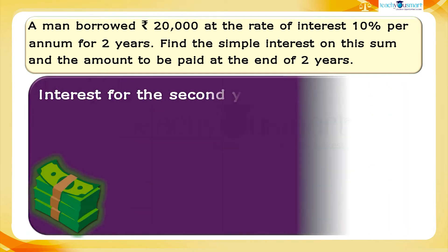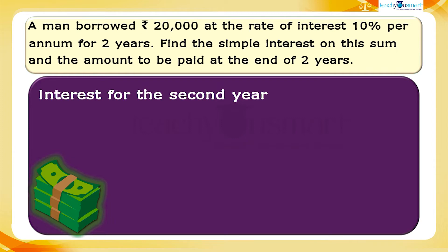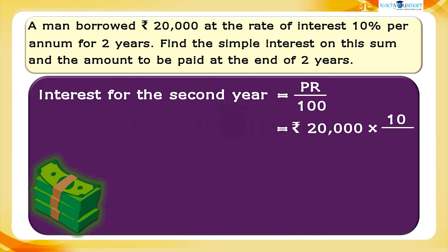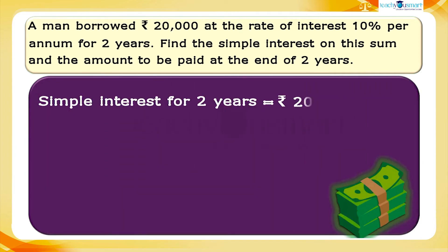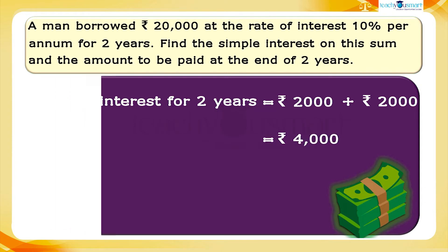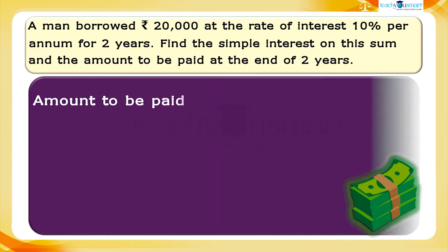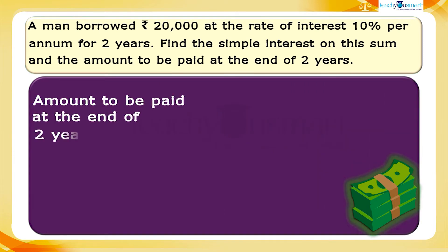In the same way, we can calculate the interest for the second year. The interest for the second year is also PR divided by 100, equal to 20,000 multiplied by 10 divided by 100, which equals 2,000 rupees. Therefore, the simple interest for two years equals 2,000 plus 2,000, which equals 4,000 rupees.